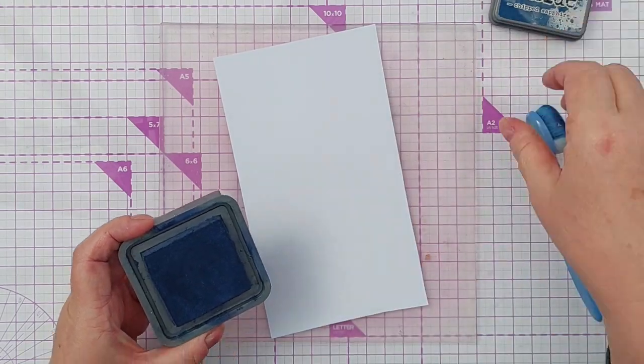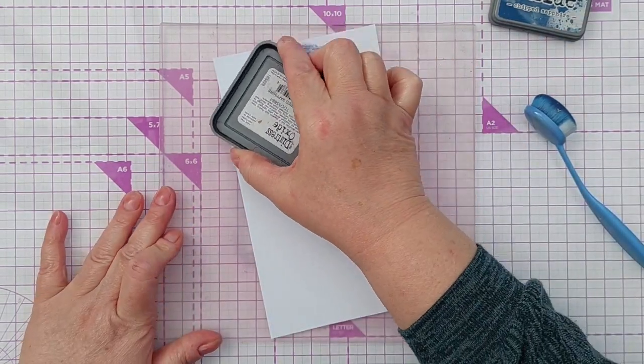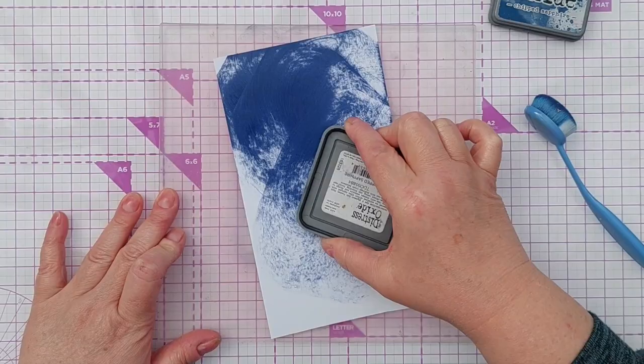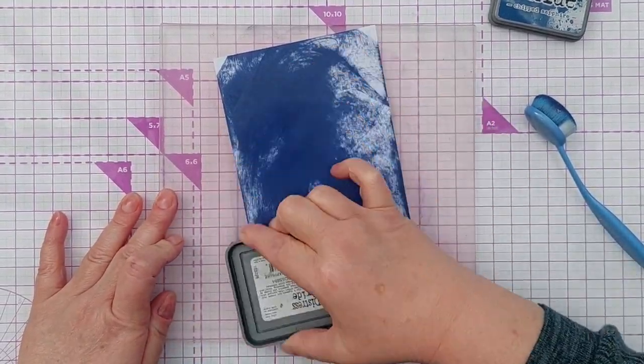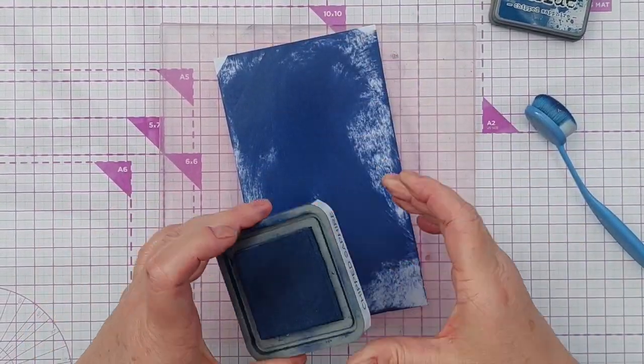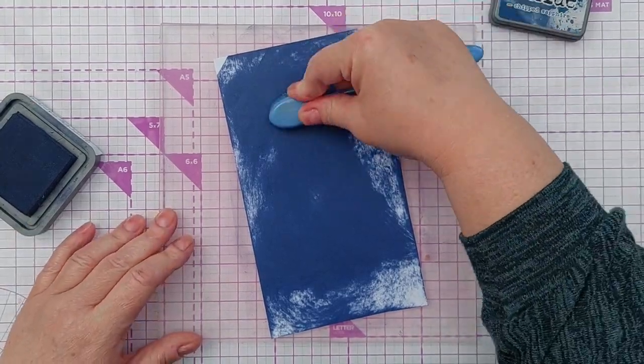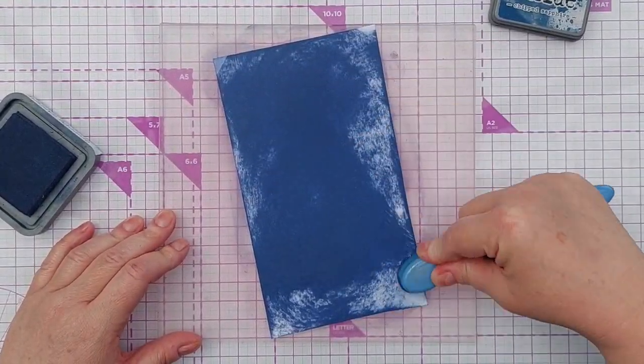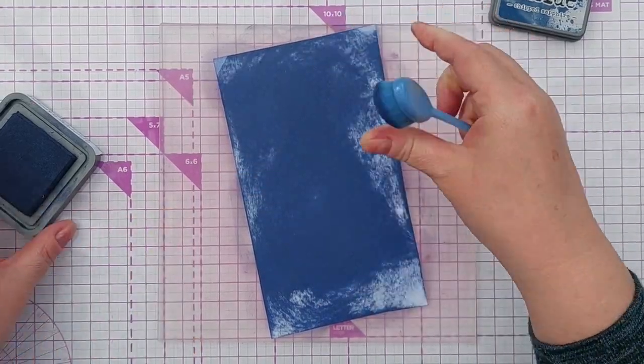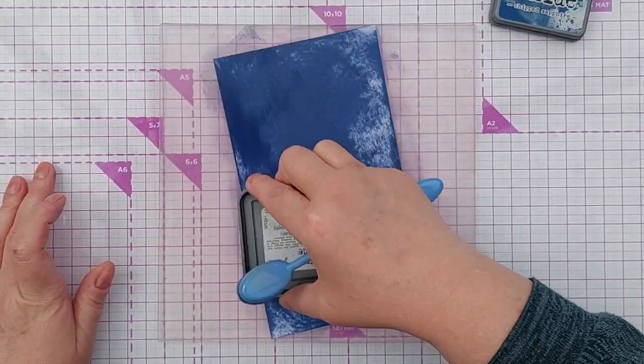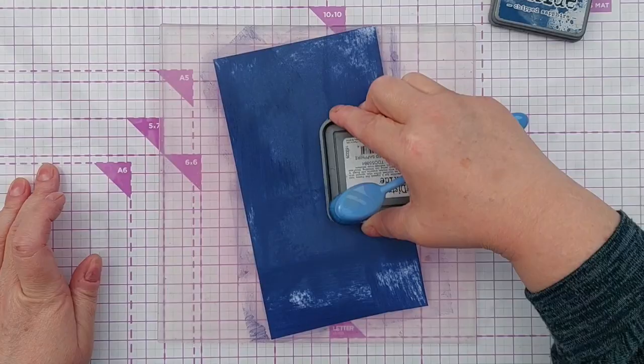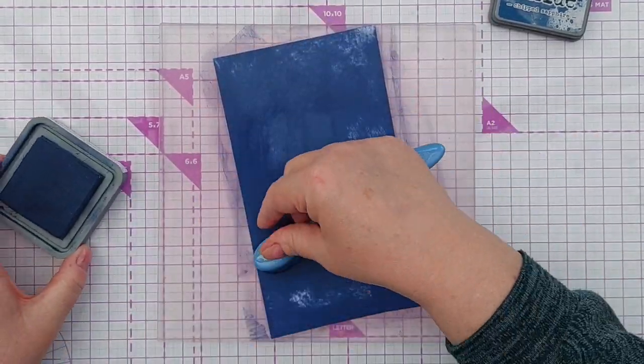First thing I'm going to do is create some kind of midnight blue paper and I'm going to smear chipped sapphire distress oxide all over this piece of smooth white cardstock and blend it out repeating until I get a really good coverage.